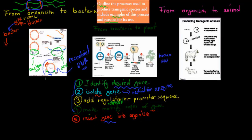Then the last step is to insert the gene into the organism. Now the organism is a transgenic species. Whatever example you have, these are the steps you follow: identify, isolate, add regulator, make multiple copies, and insert gene into organism.